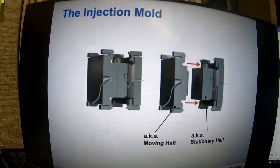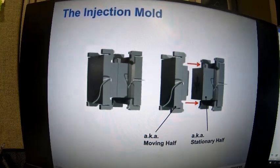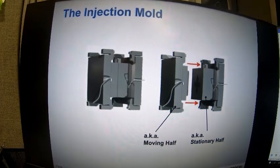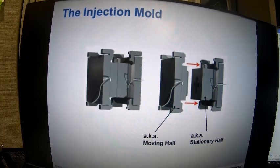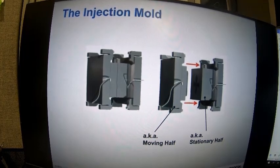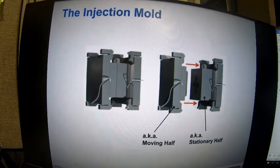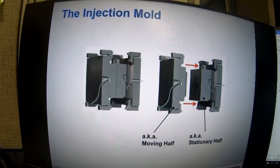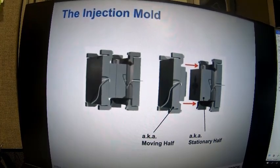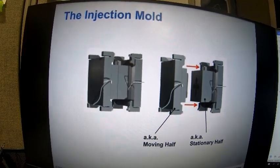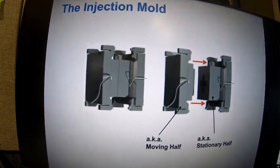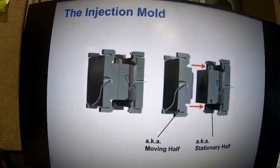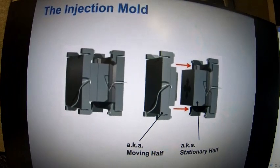Now we'll take a look at a typical injection mold. In a typical injection mold we have a stationary half and a moving half — the stationary half remains in place and the moving half opens to allow you to eject your part. Some may call it a core and cavity half, some may call it an A and B side. There are many different terminologies, and there are also more advanced mold technologies beyond this standard, simple injection mold.